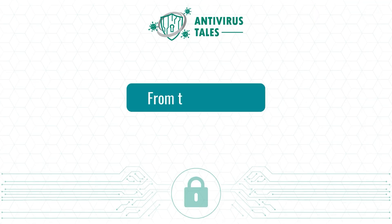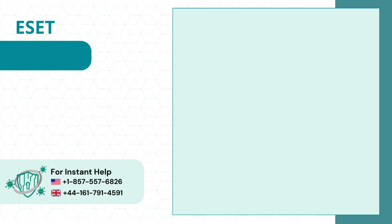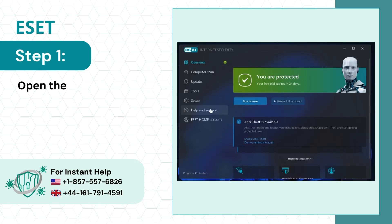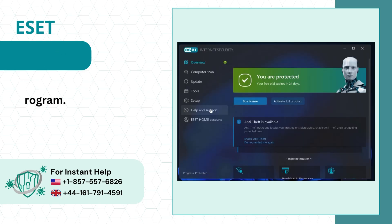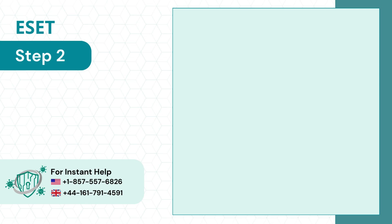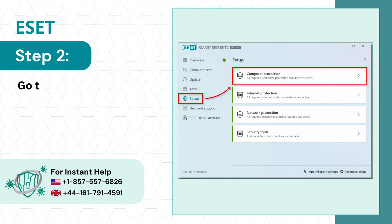From the Program. Step 1: Open the ESET Antivirus Program. Step 2: Go to Setup and select Computer Protection.